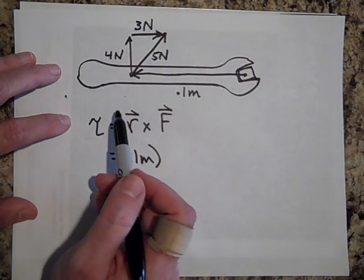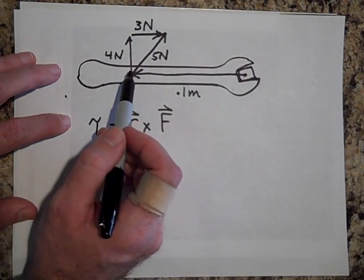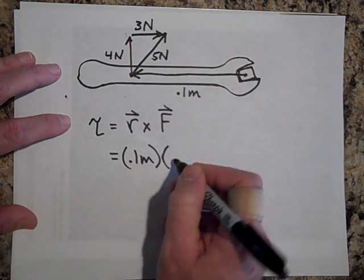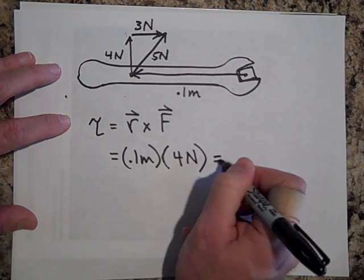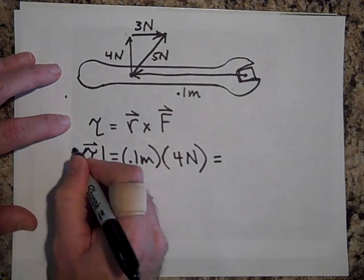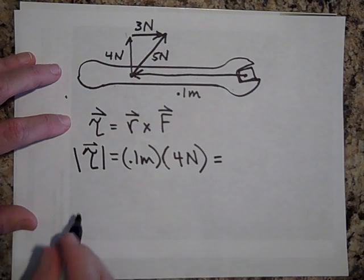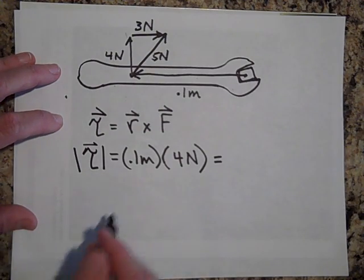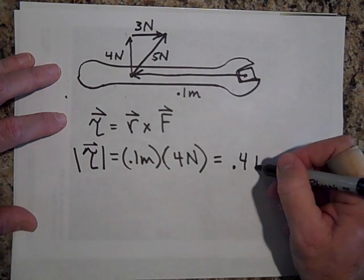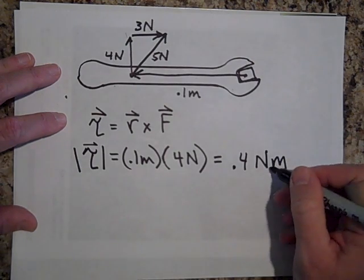But when you're figuring out torque, you only want the perpendicular component. So that's going to be 4 newtons. So the torque, just the magnitude now we're talking about, is going to be 0.4 newtons per meter or newton meters. So that's the unit of torque.